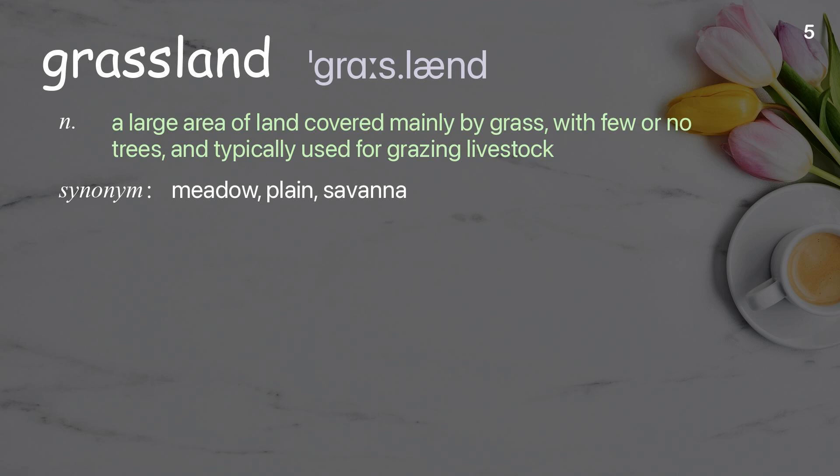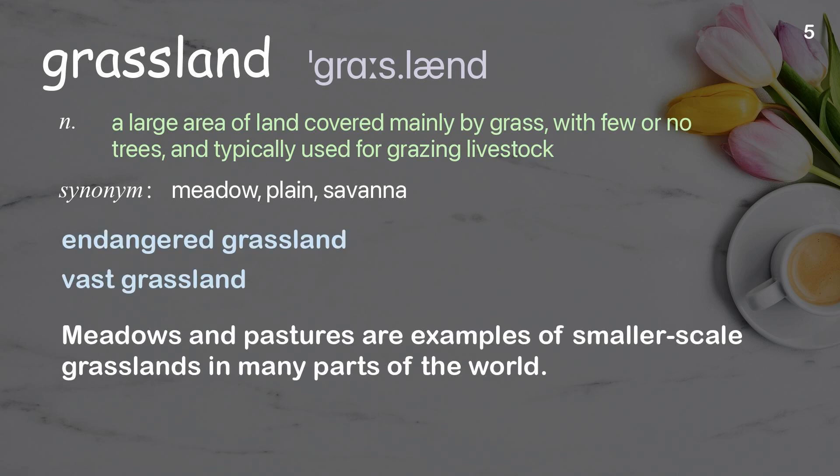Grassland: a large area of land covered mainly by grass, with few or no trees, and typically used for grazing livestock. Examples: endangered grassland, vast grassland. Meadows and pastures are examples of smaller-scale grasslands in many parts of the world.